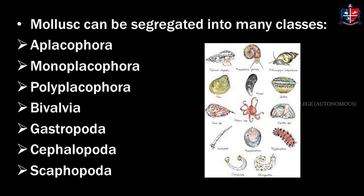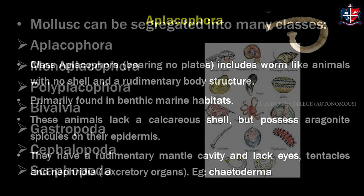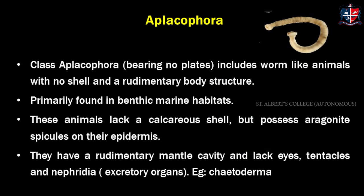Based on the above-mentioned characteristics, phylum Mollusca is segregated into different classes. The different classes are: Aplacophora, Monoplacophora, Polyplacophora, Bivalvia, Gastropoda, Cephalopoda, and Scaphopoda. Let's have a detailed note on each class.